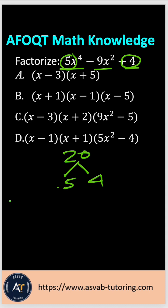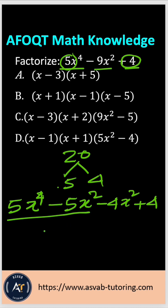That gives you 5x to the 4th power minus 5x squared minus 4x squared plus 4. Now take the common 5x squared from here.